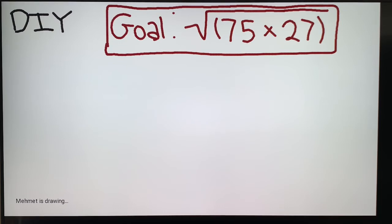So, let's solve it. So, root 75, I can see that if you divide it by 3, we get 25 and that's a perfect square. And then 27 is just 3 times 9.